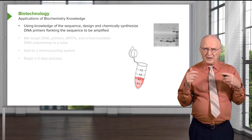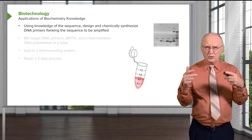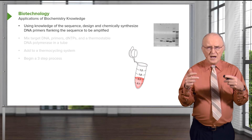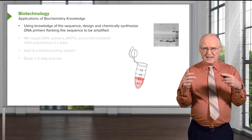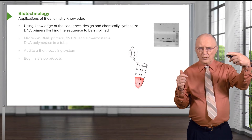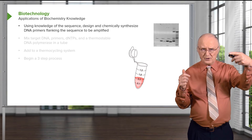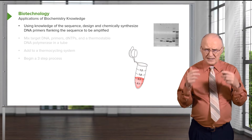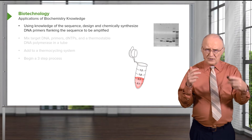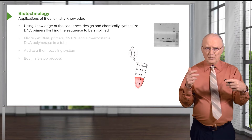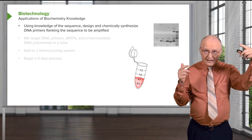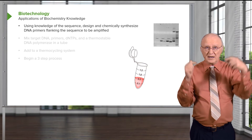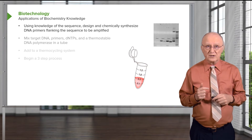If we want to replicate DNA in a test tube efficiently, we start with a DNA primer. The beauty of a DNA primer is it defines a starting point for replication. And since a primer has a specific sequence, one can design that sequence and then allow it to find the right place to form base pairs, and that will define where the replication is occurring.